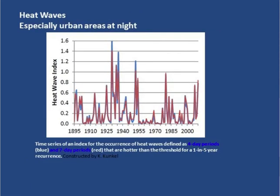Looking at heat waves — a similar story. There's a lot of variability over time. It was very dry in the early part of the 20th century, which correlates in summertime with above-normal temperatures, producing some really extreme heat waves then. There was a real lull in heat waves in the middle part of the 20th century going into the 1970s, then things picked up again. But again, really no long-term trend in terms of heat — if anything, a slight downward trend.